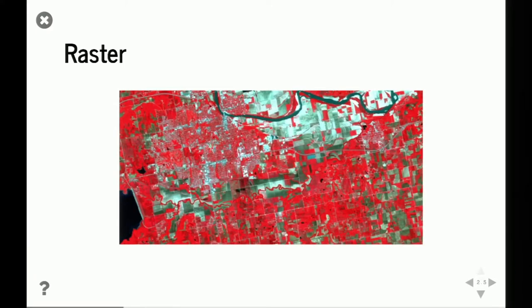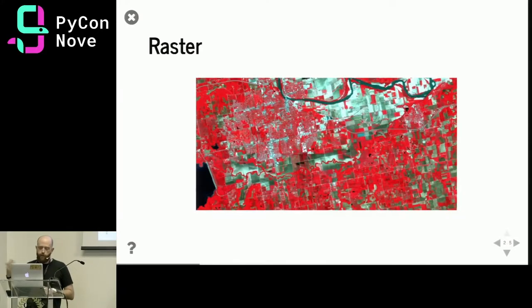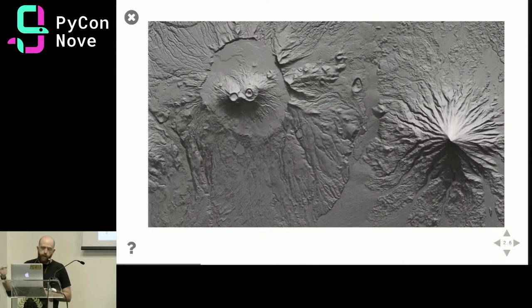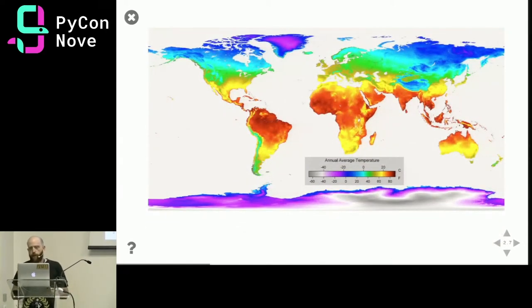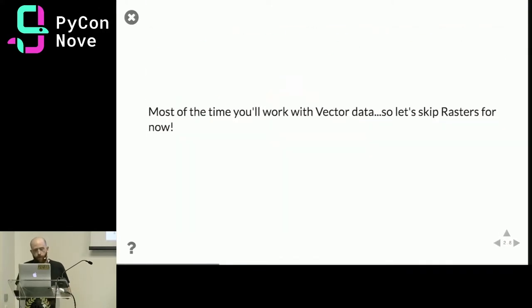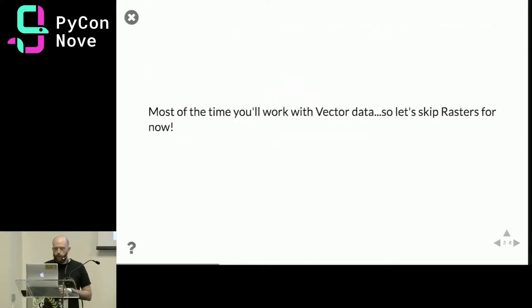Raster data, on the other hand, is essentially images — a continuous representation of data where every pixel contains different information. In the case of remotely acquired satellite imagery, it can be used for inferring land use of a particular area, or the pixel value can contain the height of a location making it a digital terrain model, or it can encode temperature. Most of the time, unless you're a remote sensing analyst, you'll work with vector data.